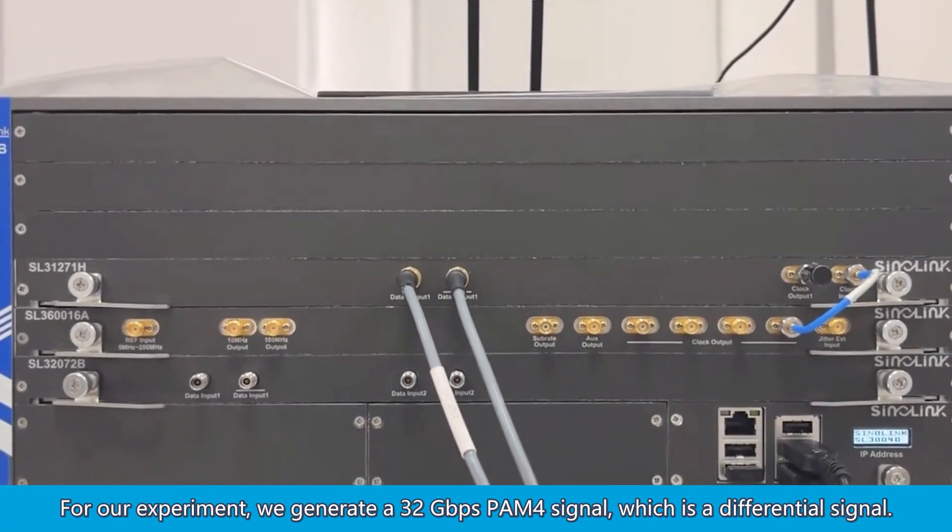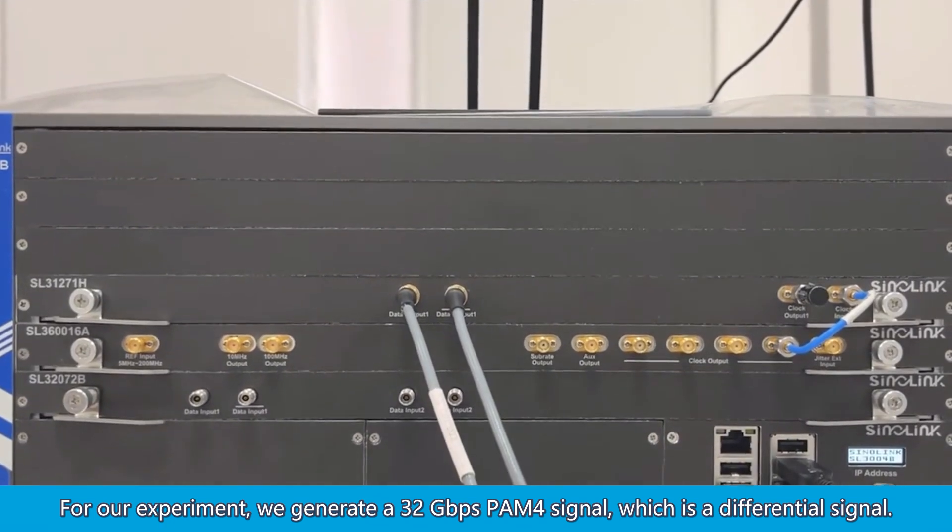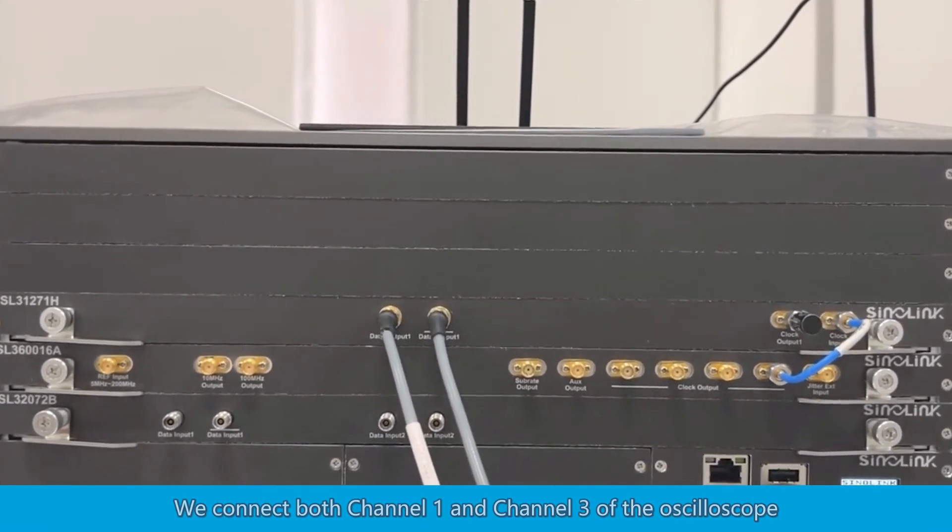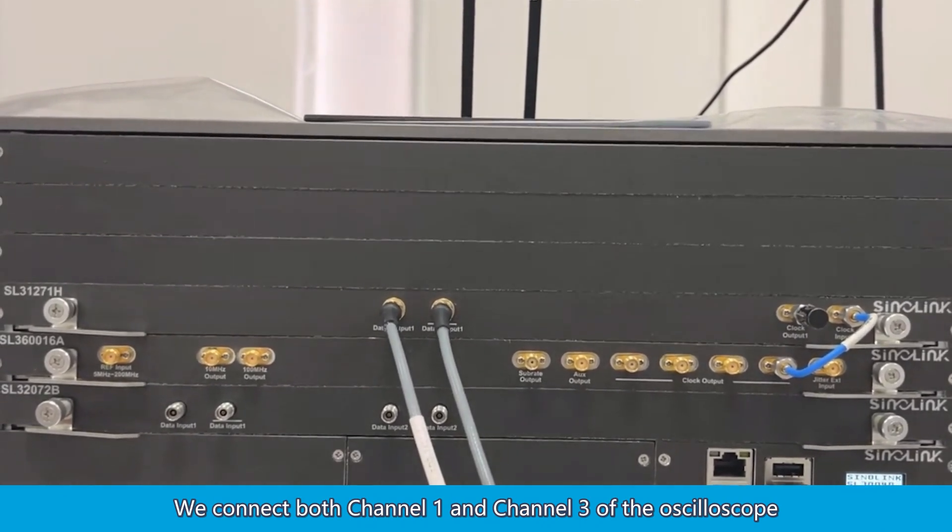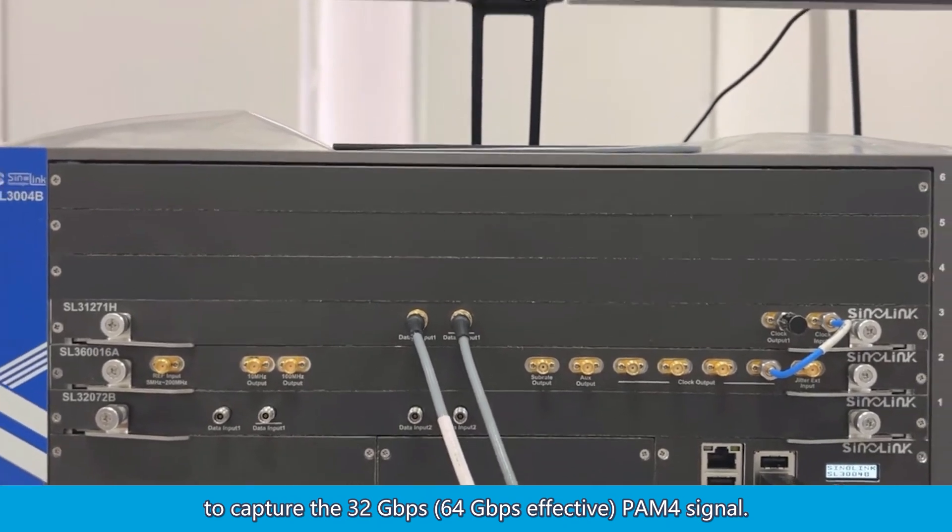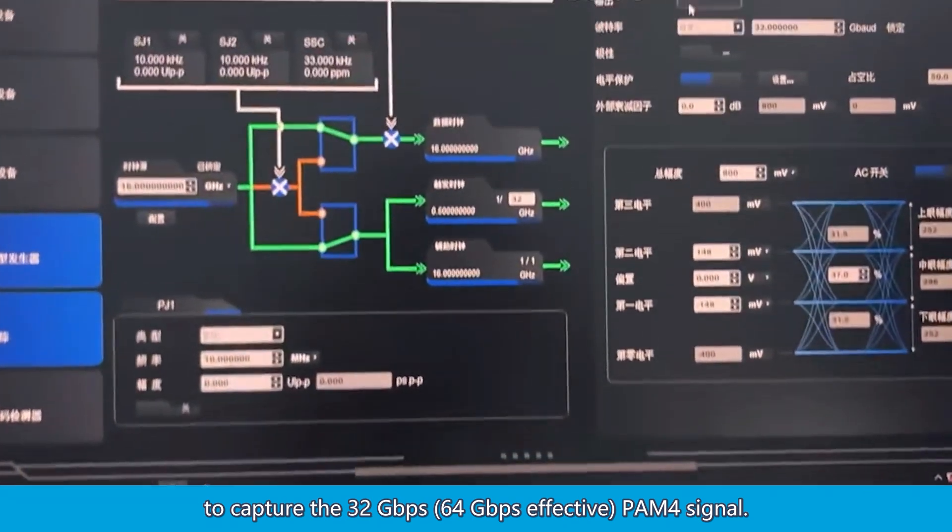For our experiment, we generate a 32 gigabits per second PAM-4 signal, which is a differential signal. We connect both channel 1 and channel 3 of the oscilloscope to capture the 32 gigabits per second, 64 gigabits per second effective, PAM-4 signal.